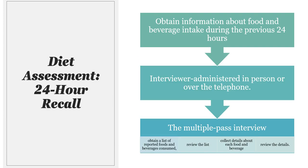A 24-hour dietary recall can be really helpful because participants typically remember what they ate the day before. We administer it through an interview, often by phone. A phone interview can be more helpful because people tend to be a bit more honest when they can't look the interviewer in the eyes — they might not want to admit they had two bacon cheeseburgers. That's called interview bias. Sometimes the phone helps with that, as people tend to be slightly more honest.